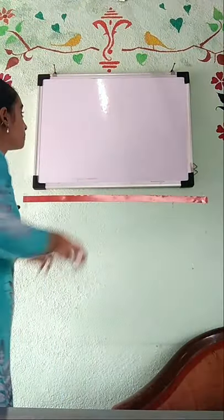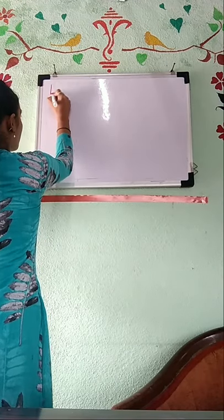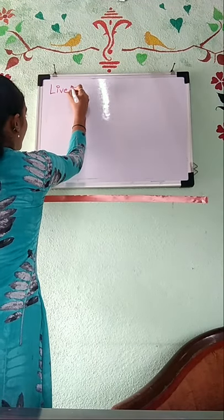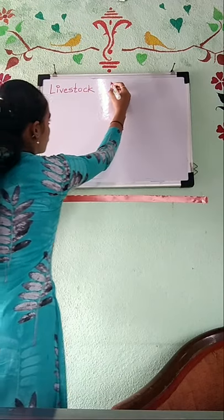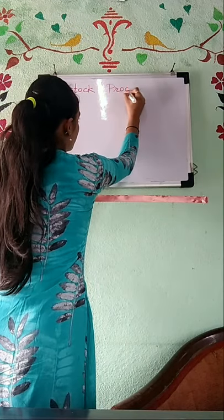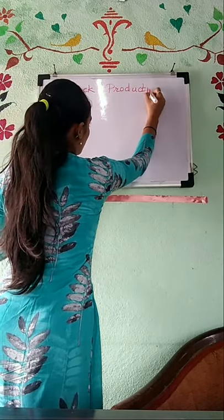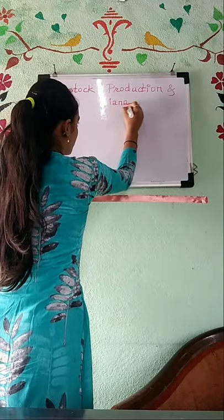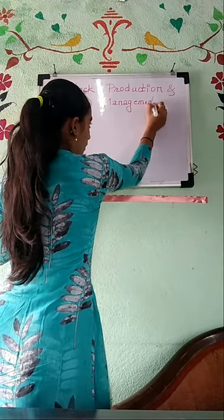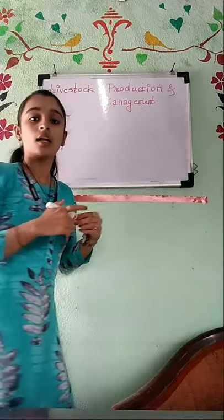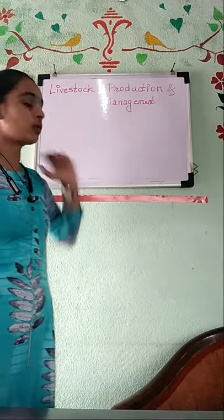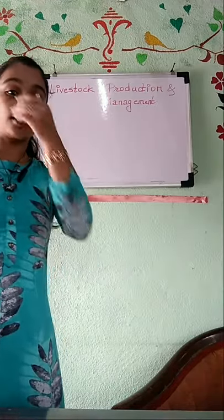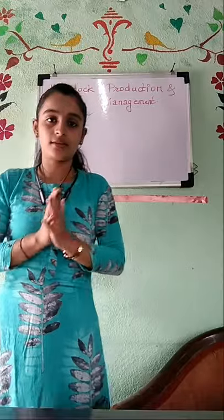This is course number AS 233, and the credits are 3 — 2 plus 1. The name of the course title is Livestock Production and Management.